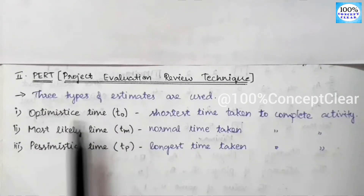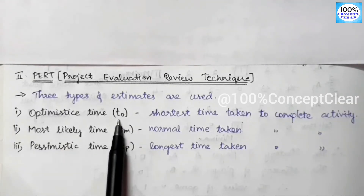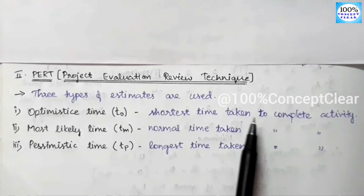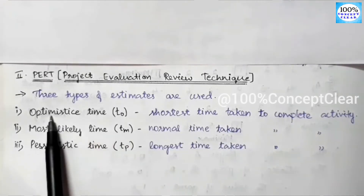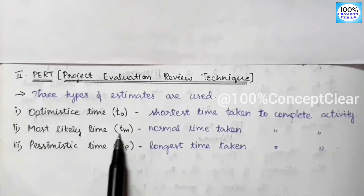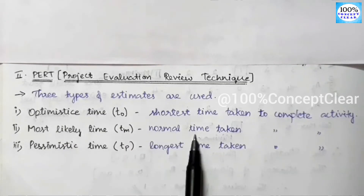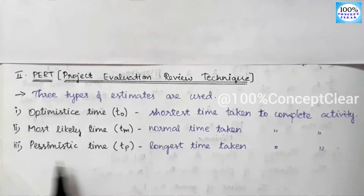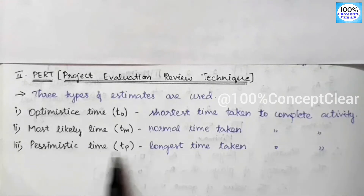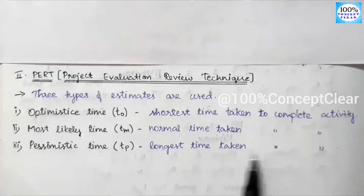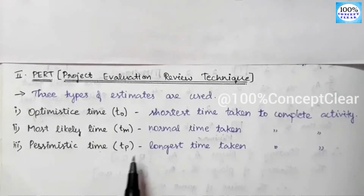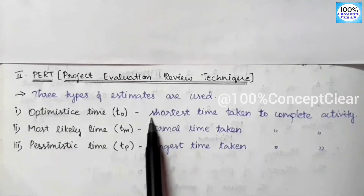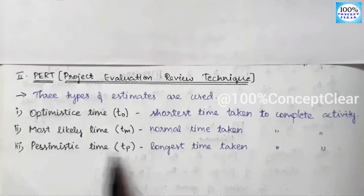The three types of time estimates in PERT are: first, Optimistic Time (TO) — the shortest time taken to complete an activity; second, Most Likely Time (TM) — the normal time taken to complete an activity; and third, Pessimistic Time (TP) — the longest time taken to complete an activity.